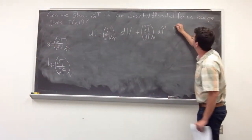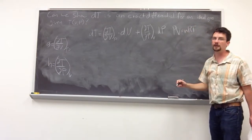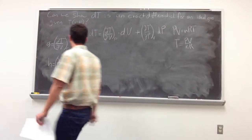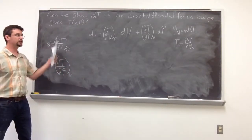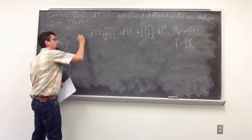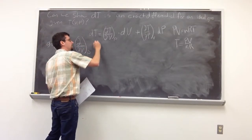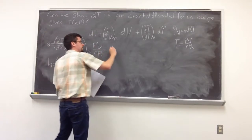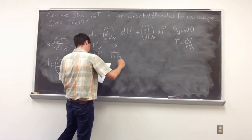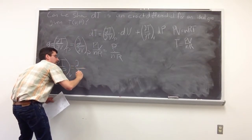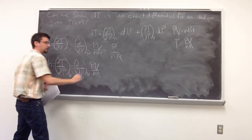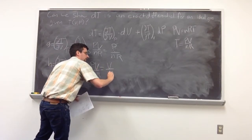Since we have an ideal gas, we know that pV = nRT. Solving for T gives T = pV / nR. Taking the partial derivative with respect to V keeping P constant, V disappears and we get g = P / nR. Taking the partial derivative with respect to P keeping V constant, P disappears and we get h = V / nR.